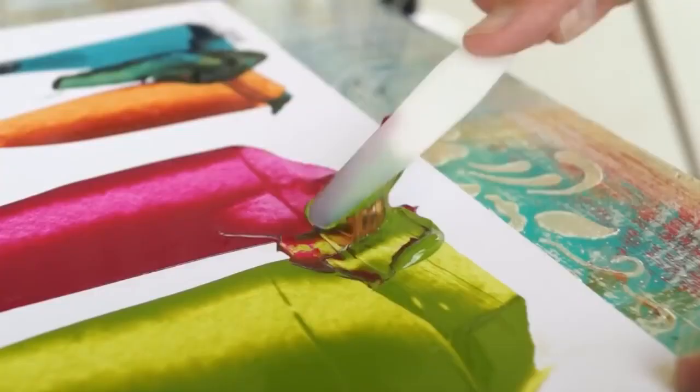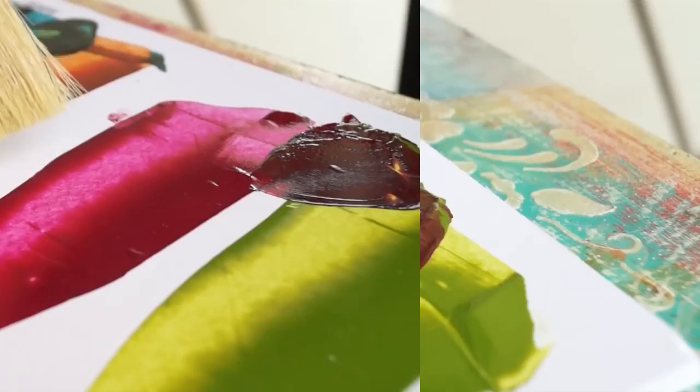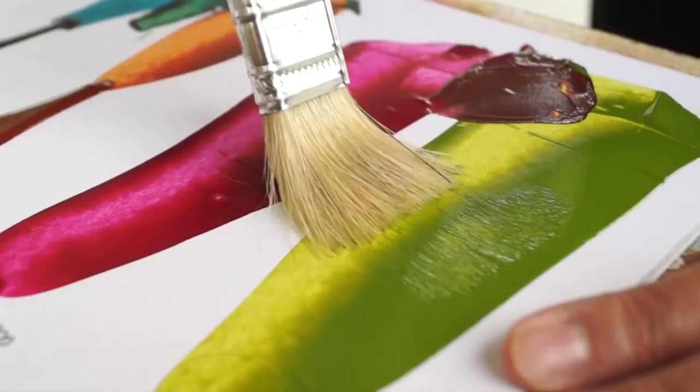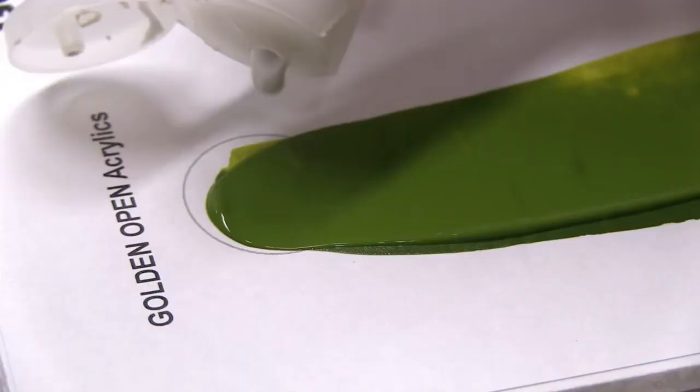The colors match perfectly across color lines and can be intermixed easily. Before we move on, see how the thinner areas of the heavy body paints are now dry or almost dry, while the open acrylics still remain quite workable due to the slower drying time.